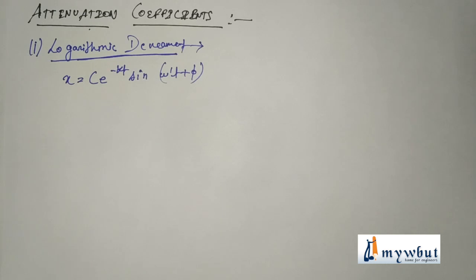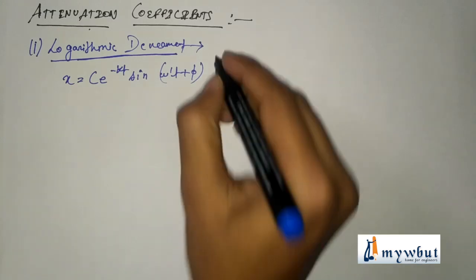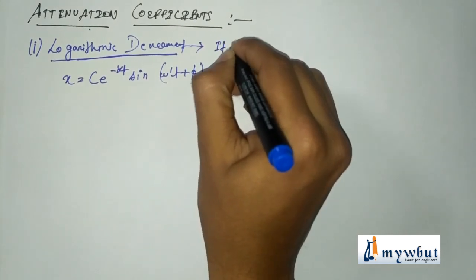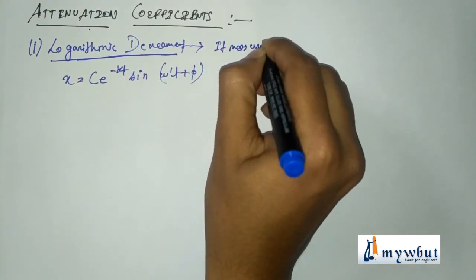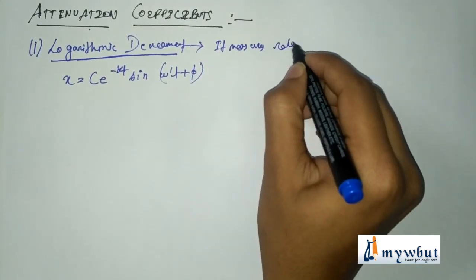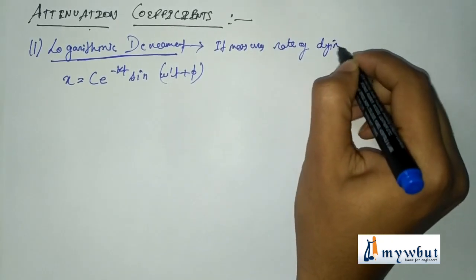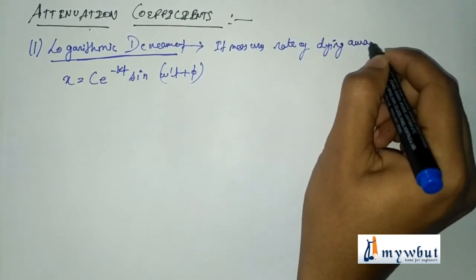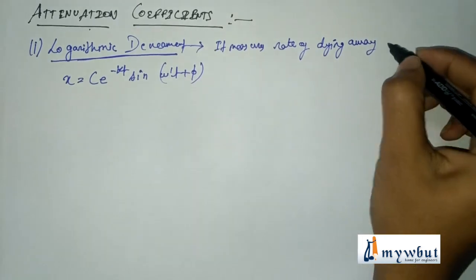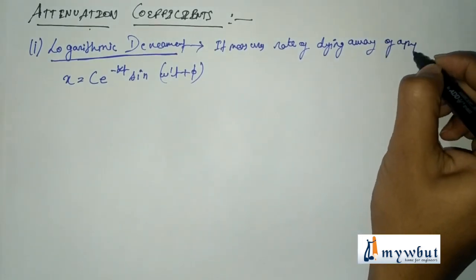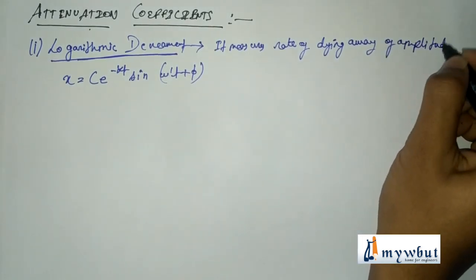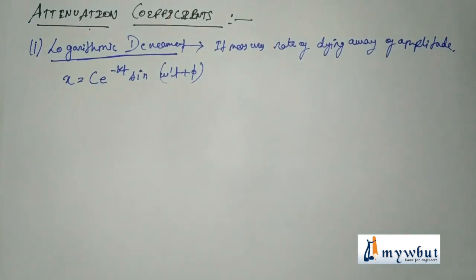Logarithmic decrement measures the rate at which the amplitude of damped oscillatory motion dies away.